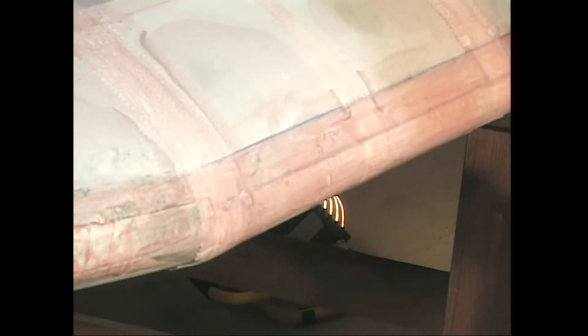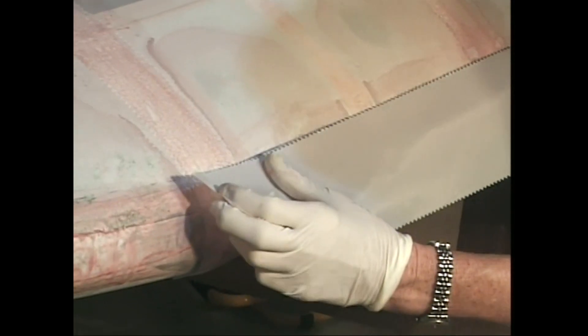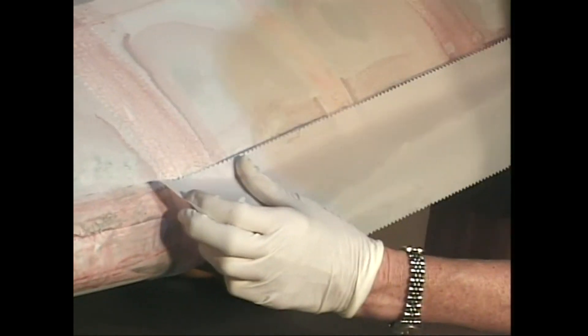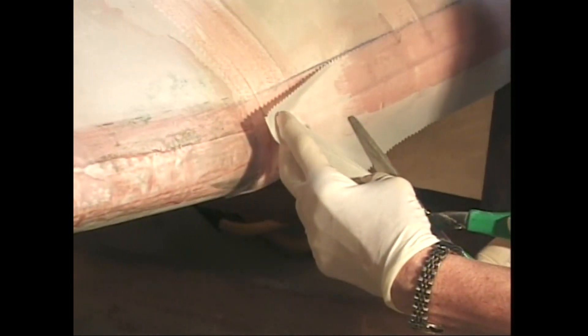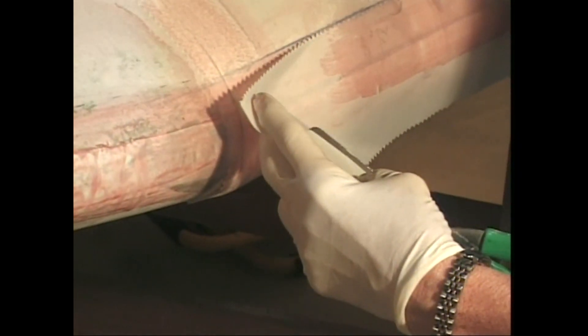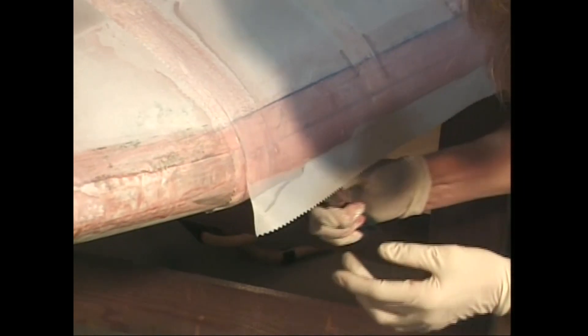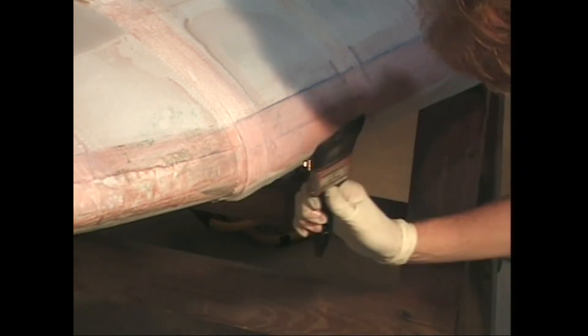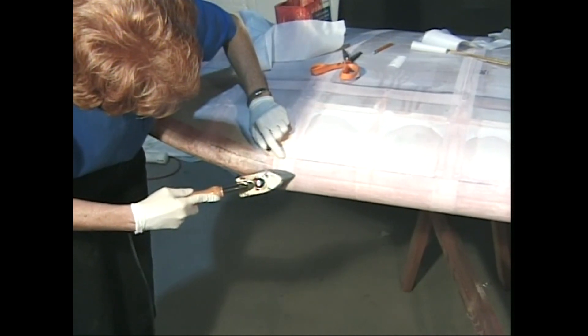The leading edge seam tape will follow the blue chalk line we've previously snapped. You can put on one side of the tape now and then finish it up when the wing is turned over. The straight tape will be trimmed at the edge of the leading edge skin, in keeping with the idea that if you can make your cut where there is an existing visible edge on the structure, you will never see your cut. It will blend right in.